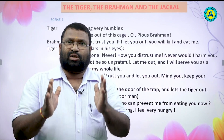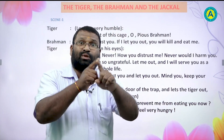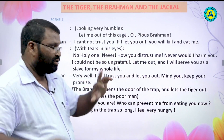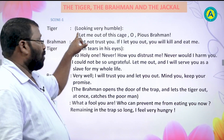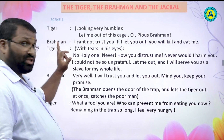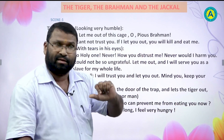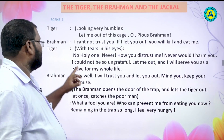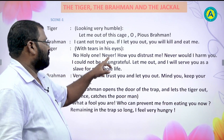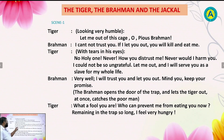Today our lesson is 'The Tiger, the Brahman and the Dhakaal.' There is a conversation between the two. Scene one. Tiger says, looking very humble: 'Let me out of this cage, O purest Brahman.' Brahman says: 'I cannot trust you. If I let you out, you will kill and eat me.' Tiger, with tears in his eyes: 'No, holy one. Never. How you distrust me? Never would I harm you. I could not be so ungrateful.'